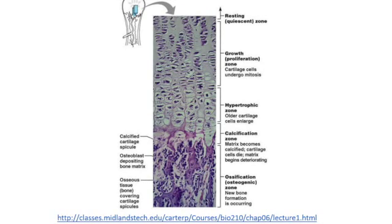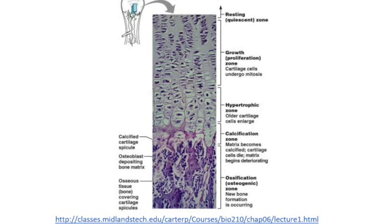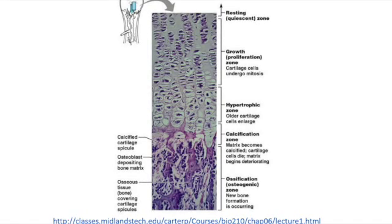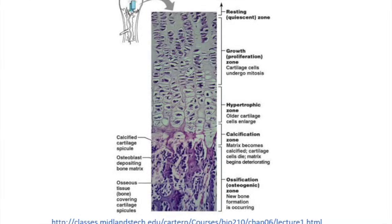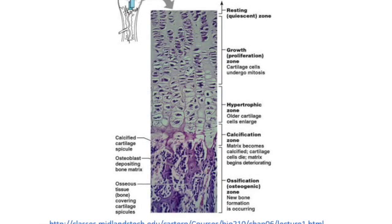The next zone is the zone of calcification, where the chondrocytes begin apoptosis, or programmed cell death, and these cells are calcified. The next zone is the zone of ossification — ossification is another word for bone growth. This is where osteoclasts enter from the diaphysis into the epiphyseal plate and break down the dead chondrocytes so that osteoblasts can come in, lay a new bone matrix, and replace the dead cartilage with bone.